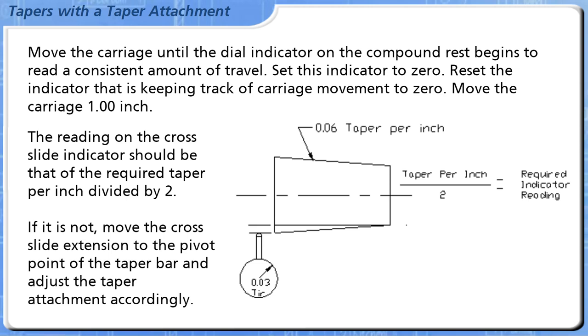If it is not, move the cross slide extension to the pivot point of the taper bar and adjust the taper attachment accordingly.